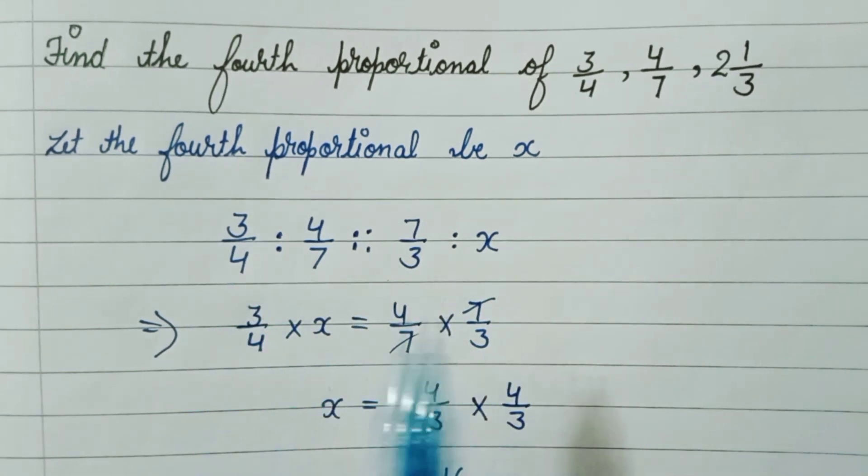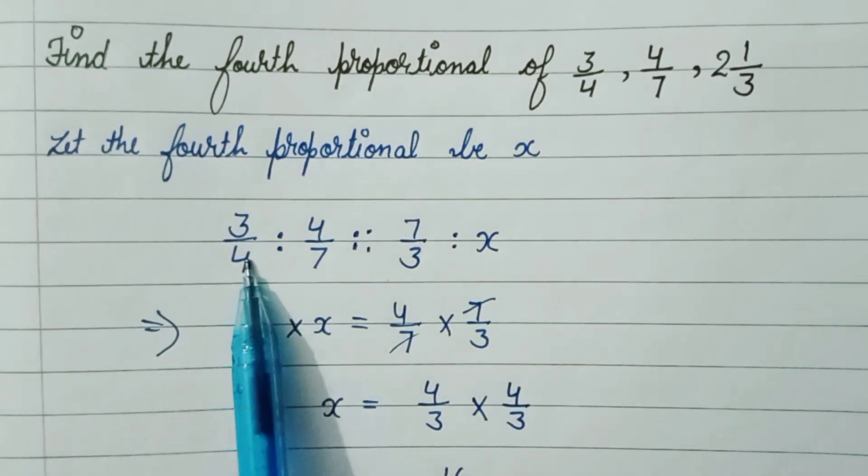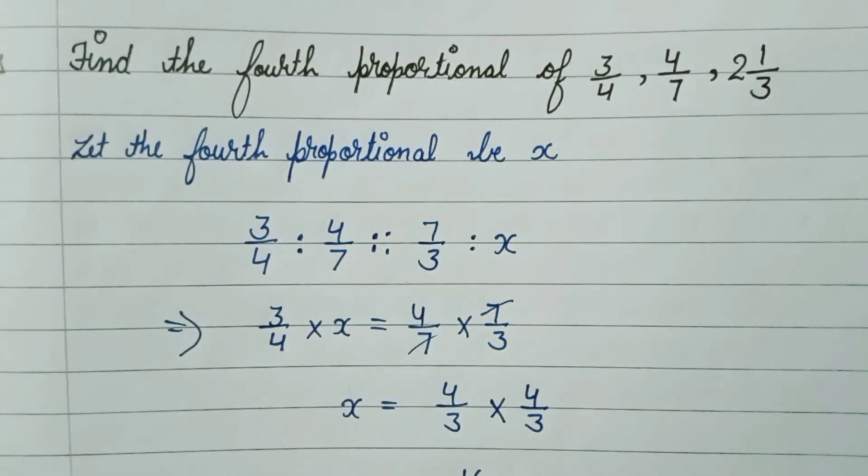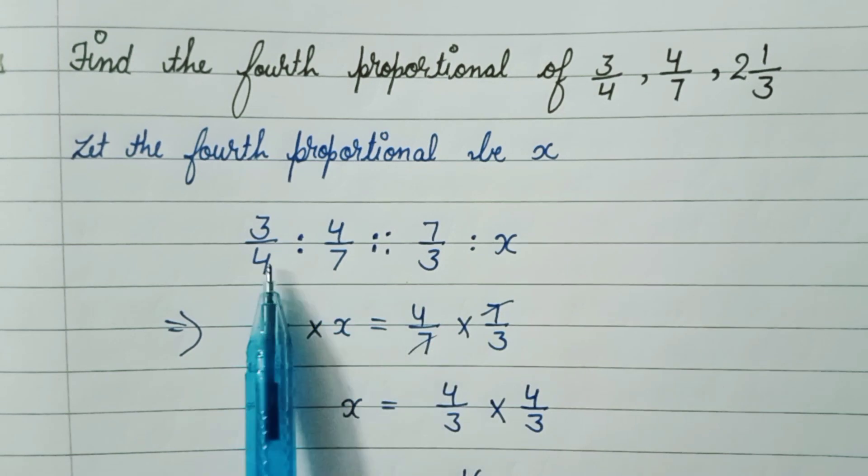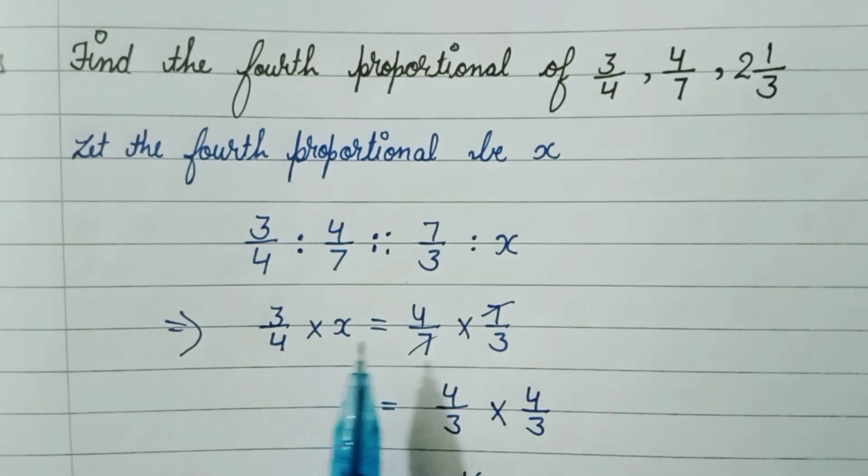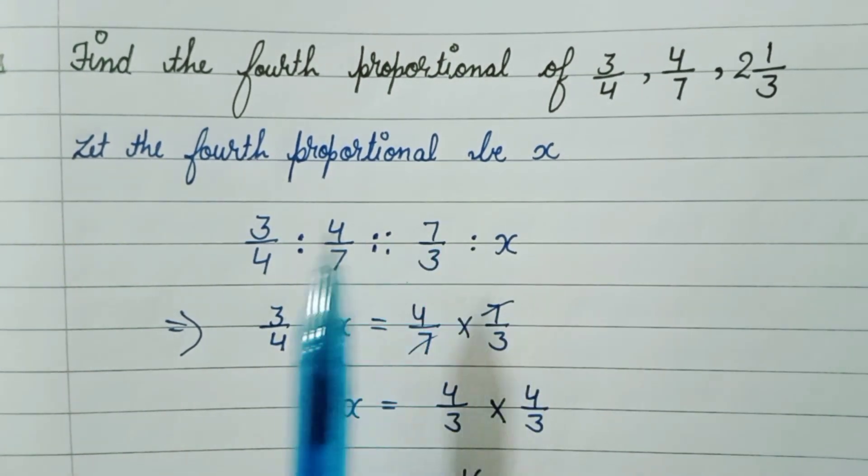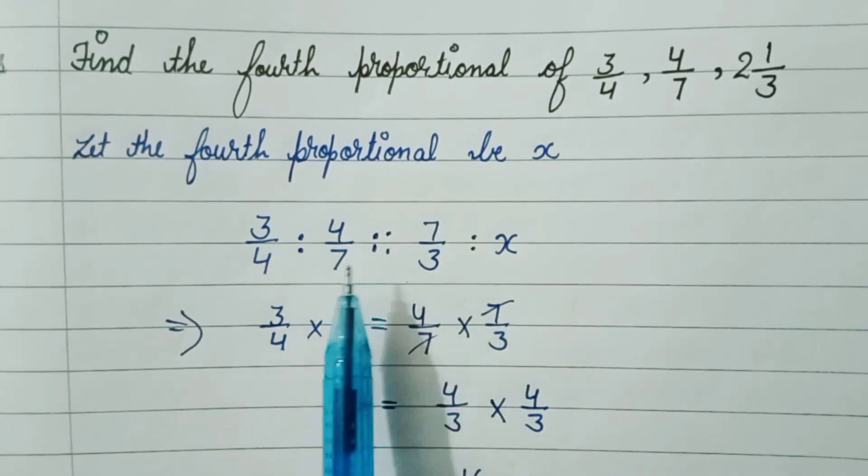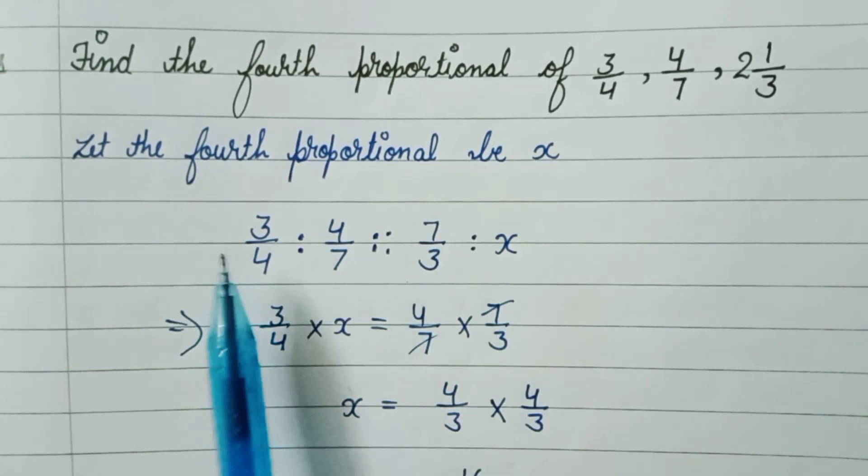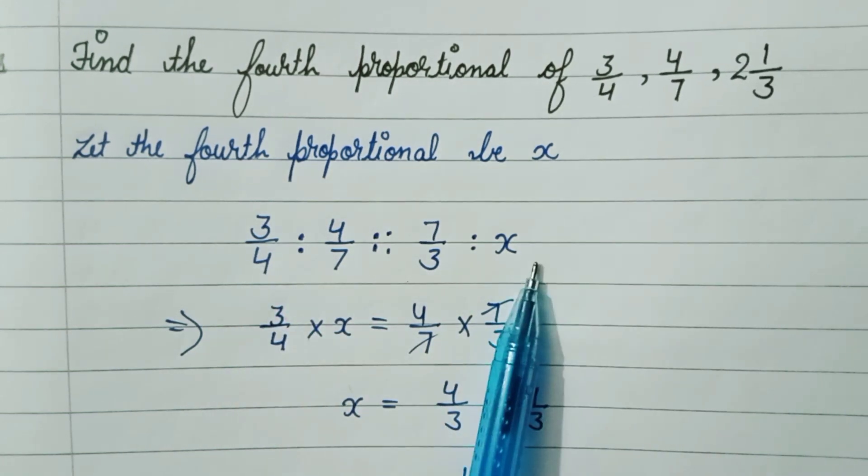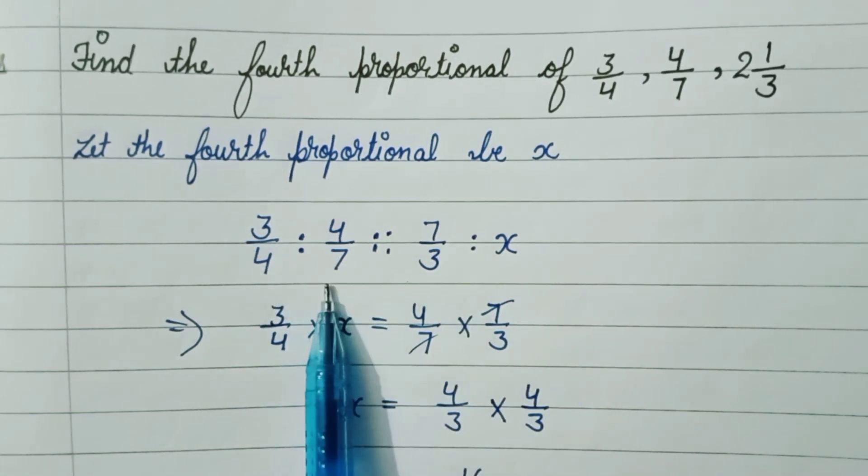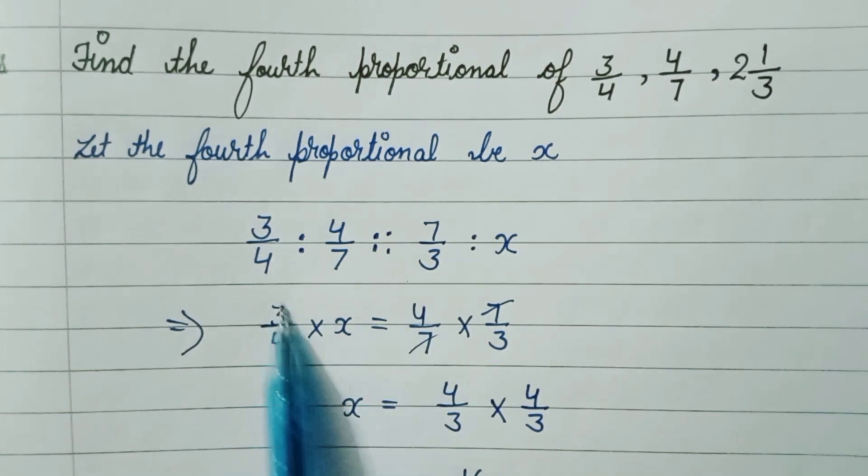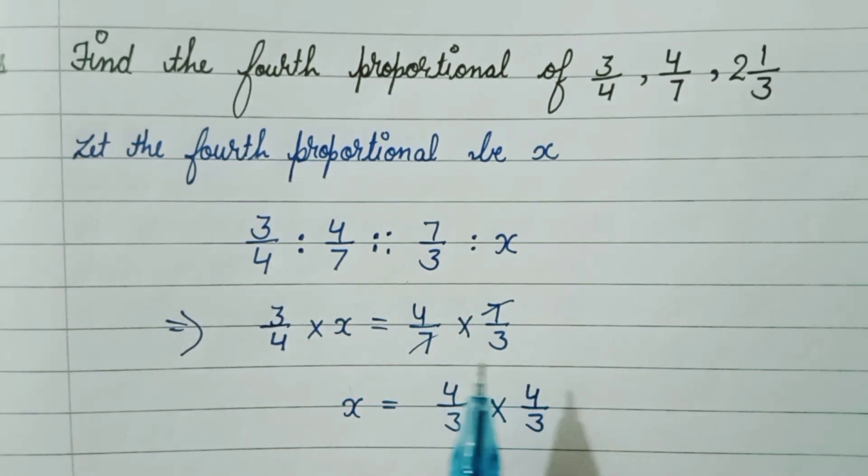The product of extremes, which are the two values outside, equals the product of means, which are the inner values. This is the product formula: product of extremes equals product of means.